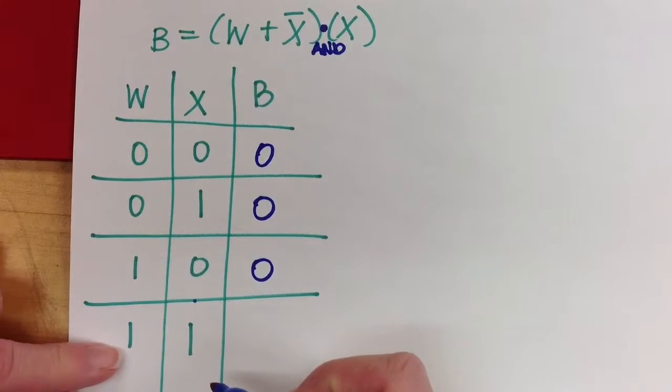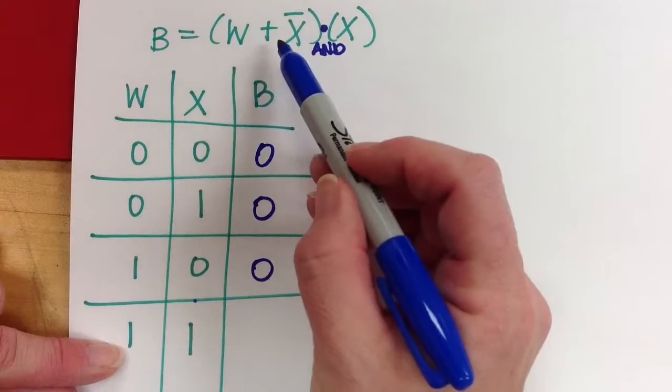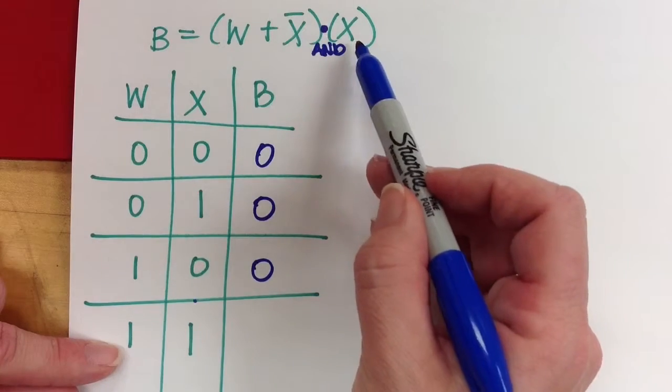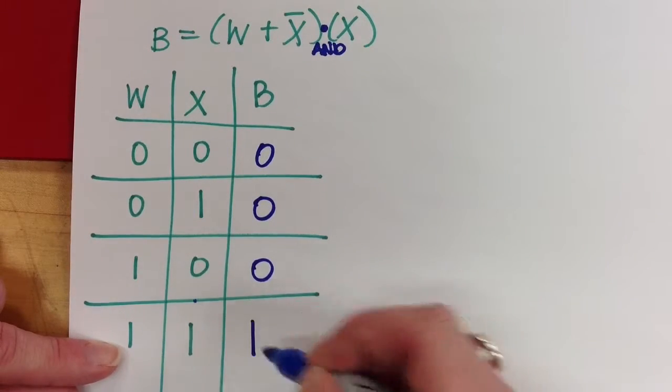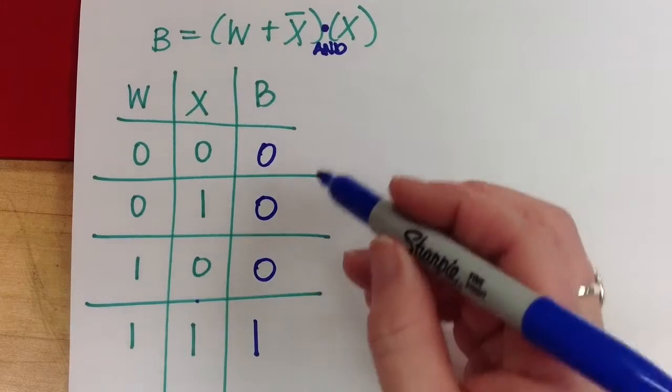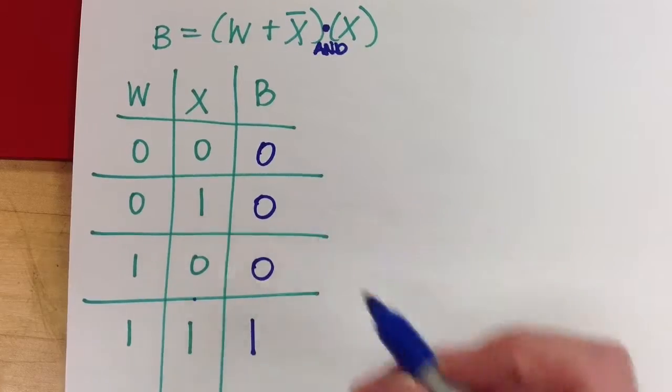All right. So I'm on my last line of my truth table, one, one. So I need W or not X. Well, I have W. That's good. So that one's okay. And I need X. Well, I have X, so that's good. So that's one. All right. So if I made this circuit, when I tested it against the truth table, that should tell me whether it was correct or not. The truth table. Now I can verify it.